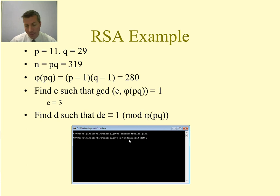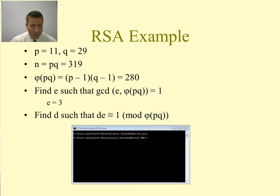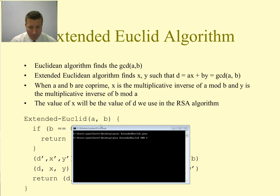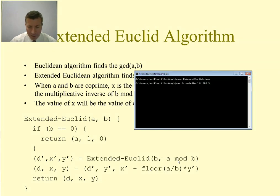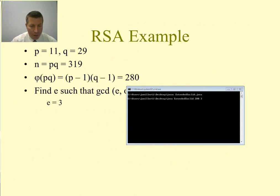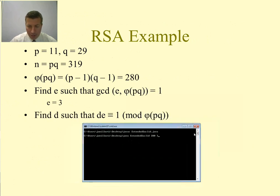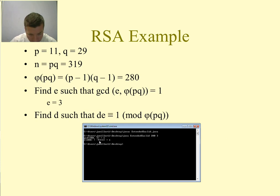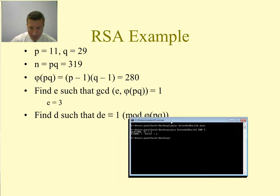Running the compiled extended Euclidean algorithm with inputs 280 and 3, the output is: 1 × 280 + (−93) × 3 = 1. Note that if you reverse the inputs the algorithm switches them internally, so it works either way. The value we want is −93, which becomes our value of d.